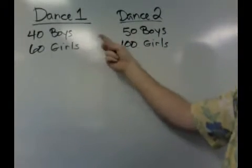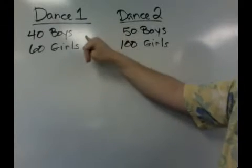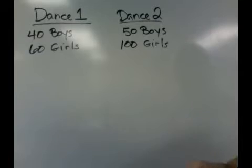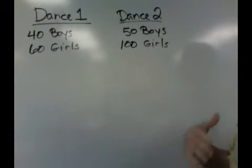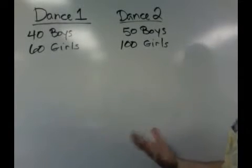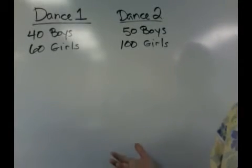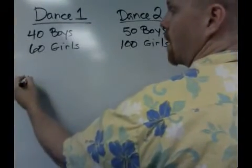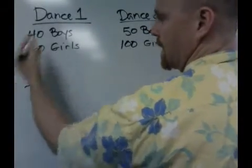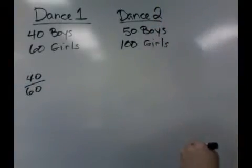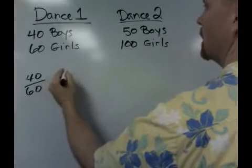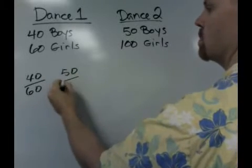On the surface, it sure looks like the boys increased, so the student council met their goal — they sure increased the rate of participation of the boys. But if you use ratios, you're going to get a different, maybe surprising, answer. So let's take the first dance and write it as a ratio: 40 to 60. And let's take the second dance and write it as a ratio: 50 to 100.